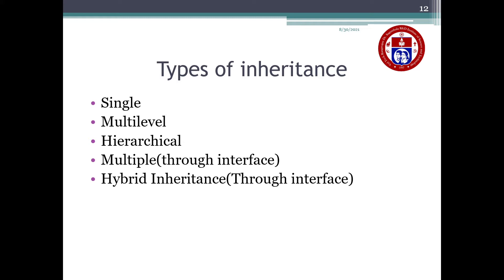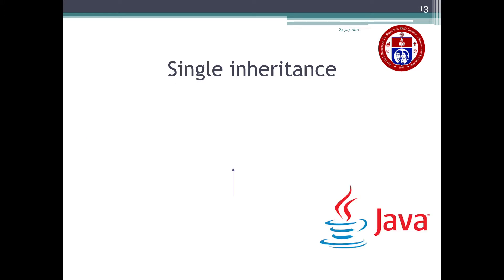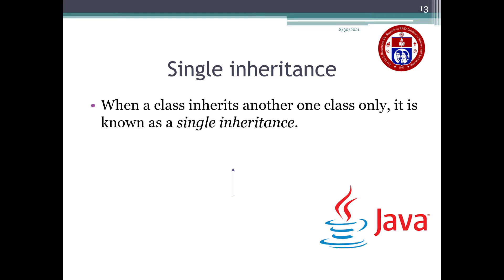What is single inheritance? When a class inherits another class only, then it is known as single inheritance. In single inheritance you will have one base class and one derived class. This type of inheritance is called single inheritance.